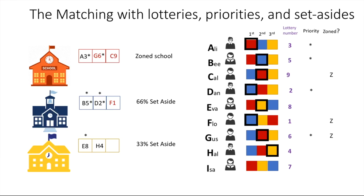The only student who doesn't have an assignment is Isa. Isa would like the red school, but the red school is currently full and Isa is not zoned for it. The only spot for a non-zoned student is the one held by Ali, and Ali has a better lottery number than Isa, so Isa won't get that school. Her second choice is the yellow school, which has a spot, so she gets that assignment. At this point all the students have an assignment, so the algorithm completes. You can see how the lottery numbers were used and how the zoning priorities and set-aside priorities changed the way the assignments were done.